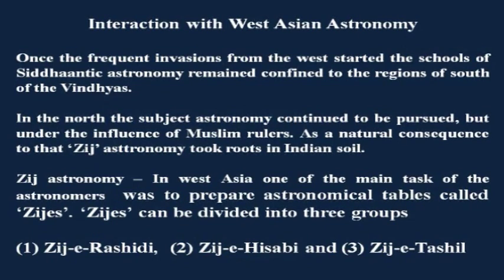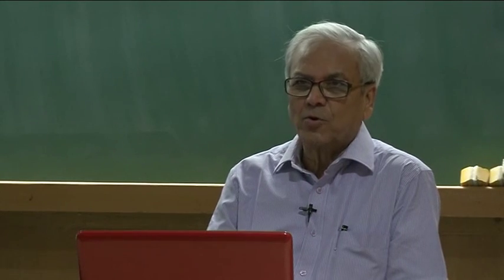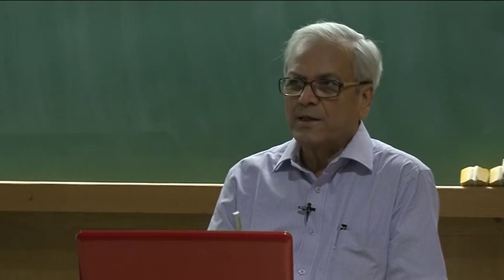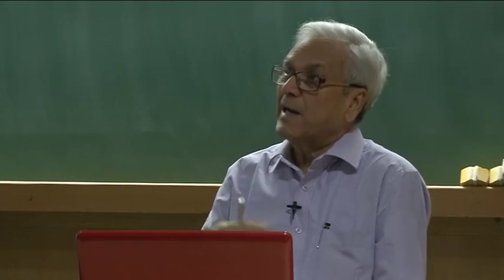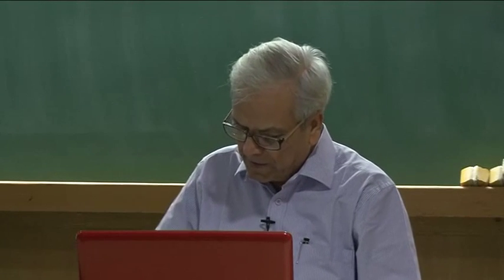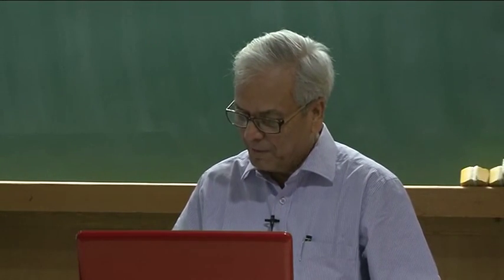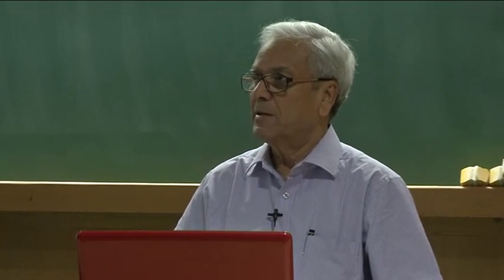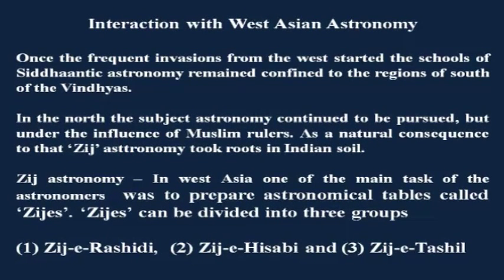There are three types of Zijs: Zij-i-Rashidi, Zij-i-Hisabi, and Zij-i-Tashil. Zij-i-Tashil consists of simplified tables for easy application to specific tasks like studying the motion of the moon alone, not the whole of astronomy. Zij-i-Hisabi presents tables with calculated data taking care of various types of corrections and effects in observed data, but does not involve observation directly. Zij-i-Rashidi are tables of raw data obtained from direct observation.